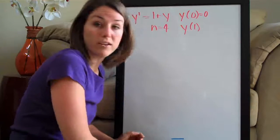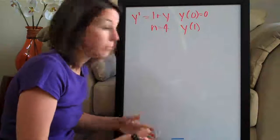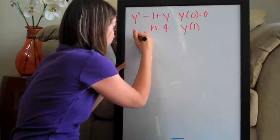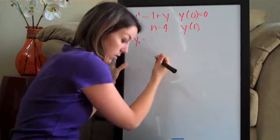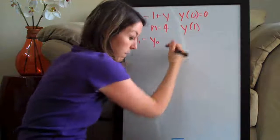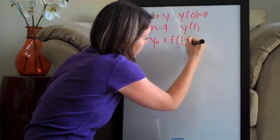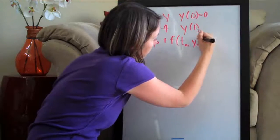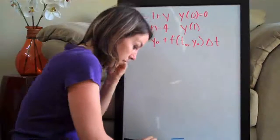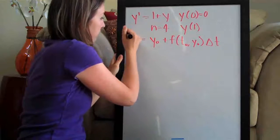I'm going to go ahead and write down the formula that we're going to need. The Euler's method formula in most textbooks is pretty complicated but really you can boil it down to the following: y1 equals y0 plus f of (t0, y0) times delta t. So this is our formula that we need.